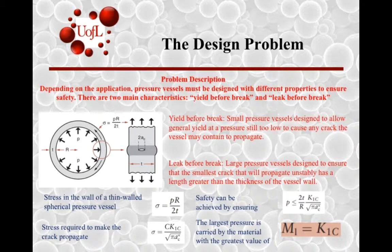The initial thought is basically: if we design something that is stronger than the applied pressure, by combining these two equations, we get a material index of K. If we design things with a fracture toughness bigger than the desired pressure, we end up hitting the spot. But this process doesn't take into account larger cracks.